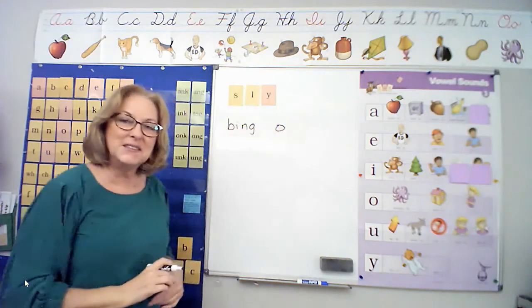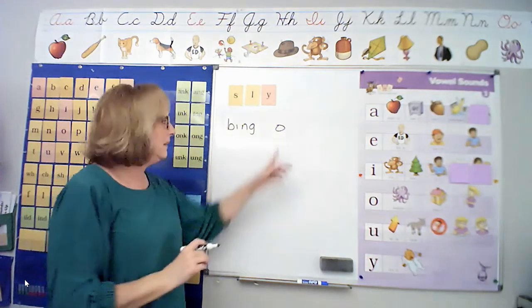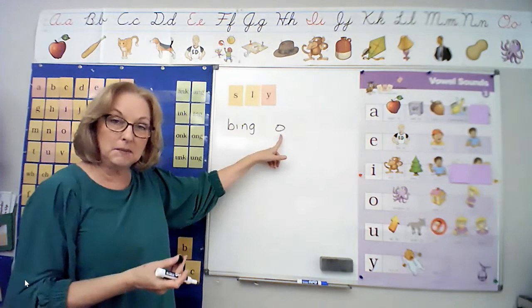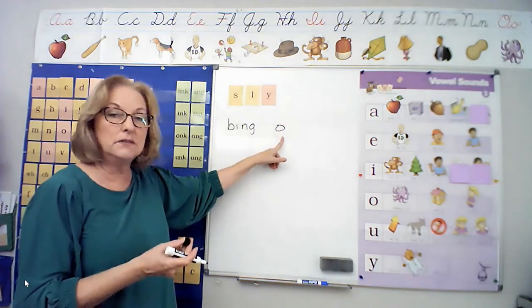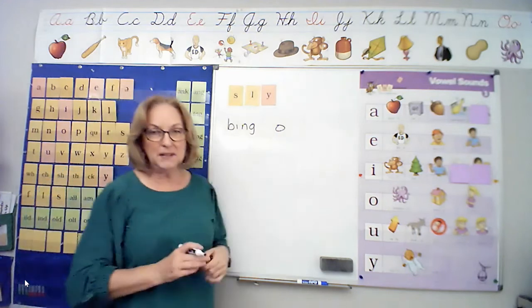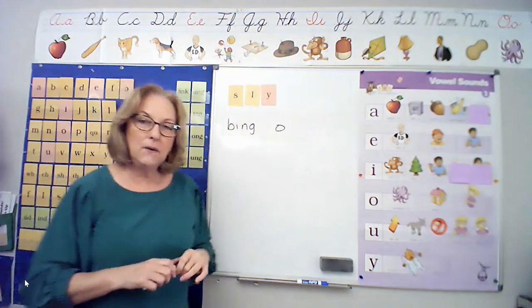Let me show you another example of that. All right, let's do this word together. Bingo, bingo. Again, the O is in the final syllable and it's an open syllable and it's saying the long vowel sound O. Have you ever played bingo before? It's a fun game. I like it.